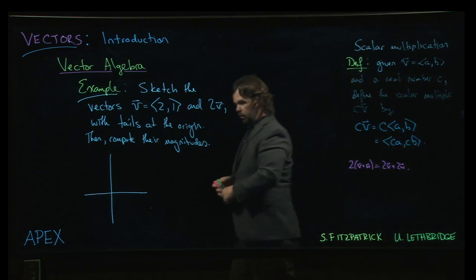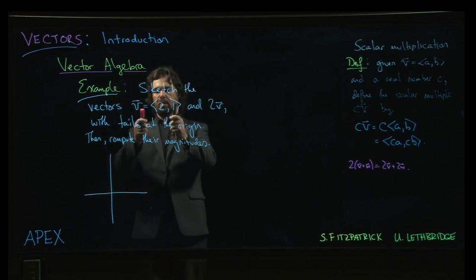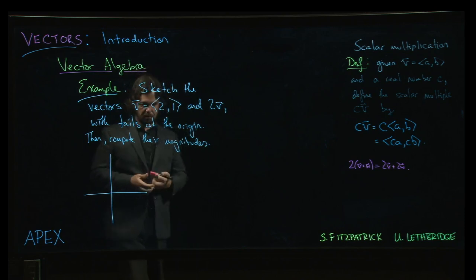All right, so now we're going to look at scalar multiplication, which we haven't quite addressed yet. So, we've got the vector (2,1), v. Let's plot that.